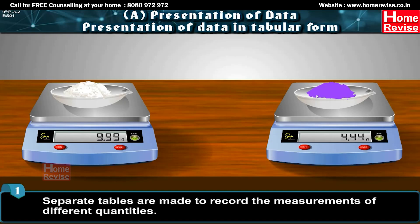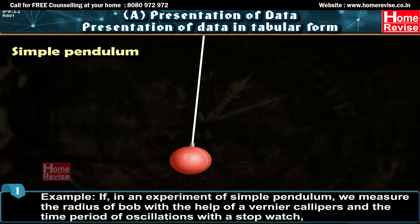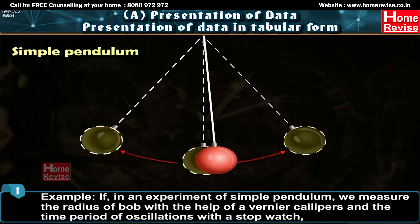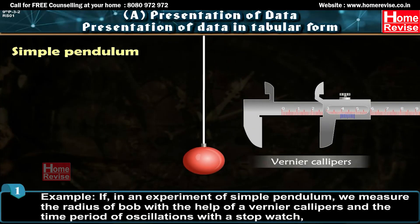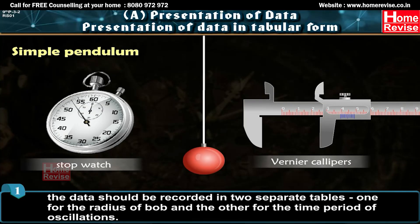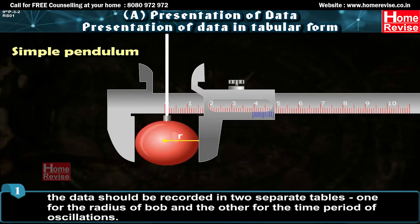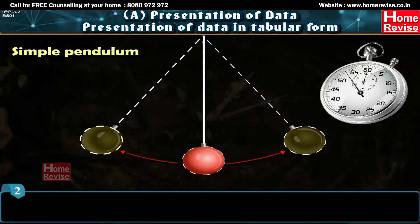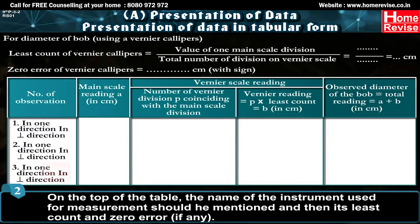Separate tables are made to record the measurements of different quantities. For example, if in an experiment of a simple pendulum we measure the radius of the bob with the help of a vernier caliper and the time period of oscillations with a stopwatch, the data should be recorded in two separate tables — one for the radius of the bob and the other for the time period of oscillations.